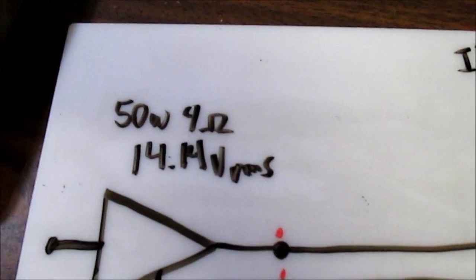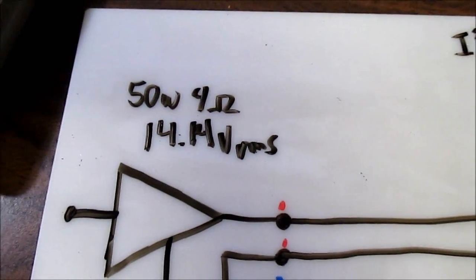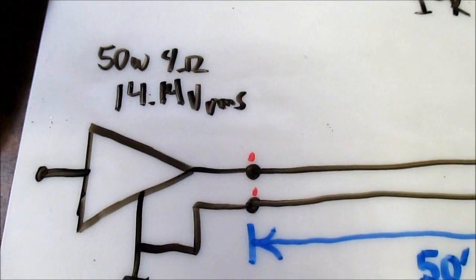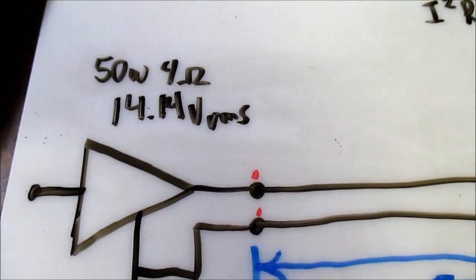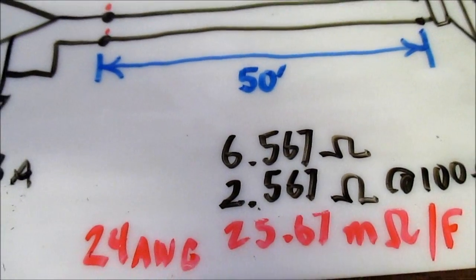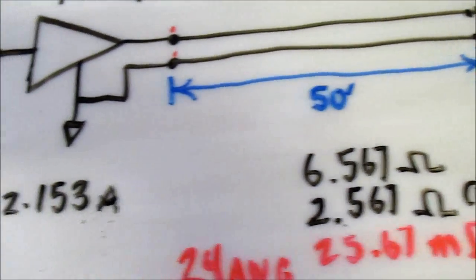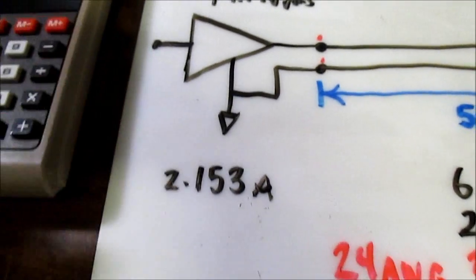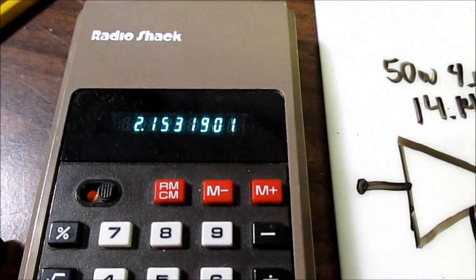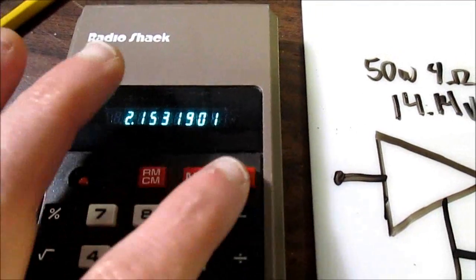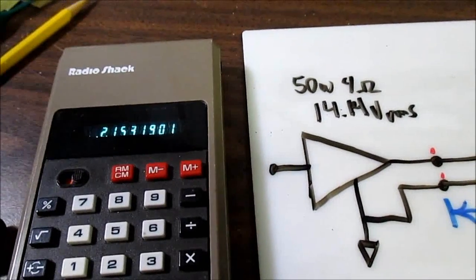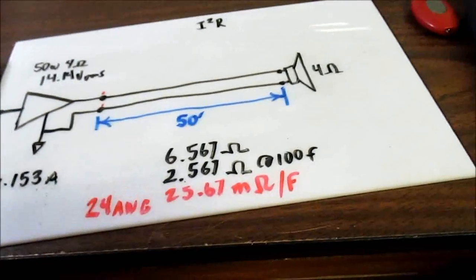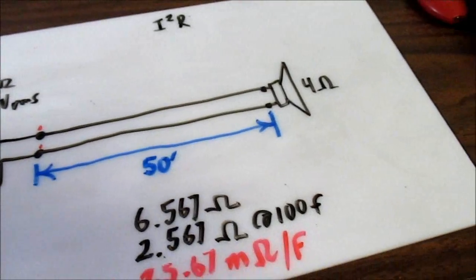Good old Ohm's law again. Volts divided by resistance gives us the current. So we put 14.14 divided by the 6.567, and we get 2.153 amps. And there's a value. I'll pop that into memory so we'll always have that available. So we do the calculations.